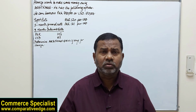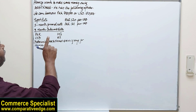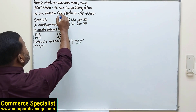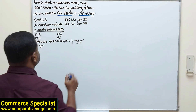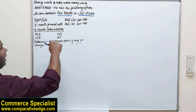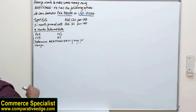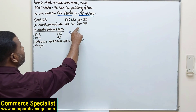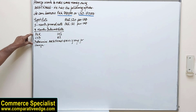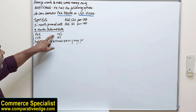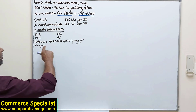Here is a question: Hamza wants to make some money using arbitrage. He has the following options — he can borrow 750,000 in Pakistani rupees or 150,000 in US dollars. The spot rate today is 1 USD = 120 Pakistani rupees and the 3-month forward rate is 1 USD = 121 Pakistani rupees. The 3-month interest rate for Pakistani rupees is 10% and for USD it is 5%. Determine the arbitrage gain, if any, for Hamza.